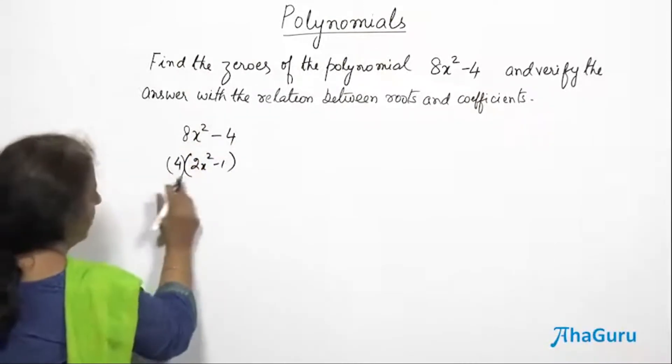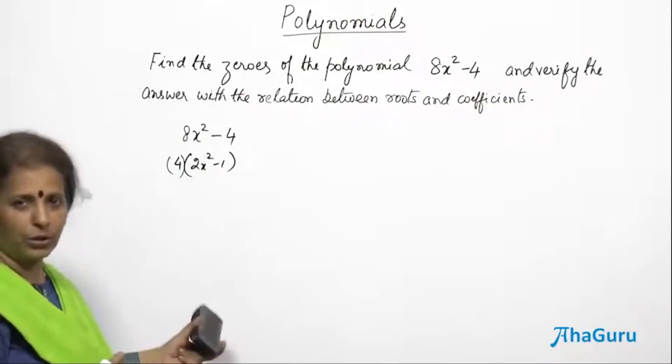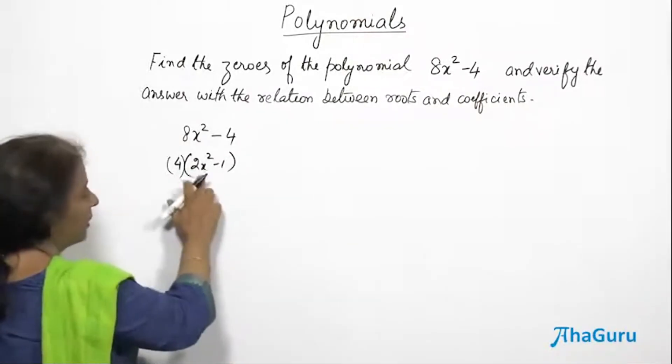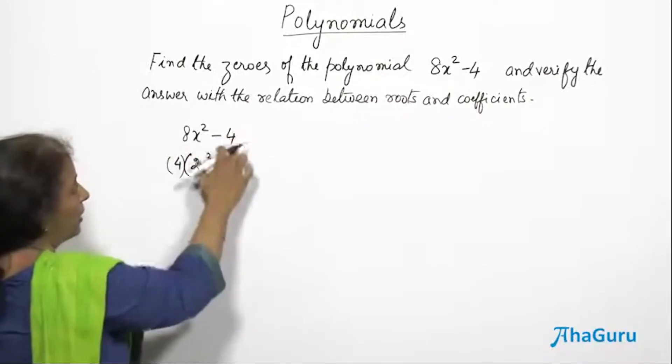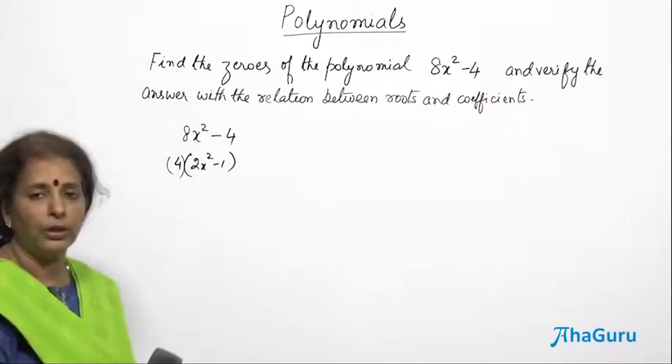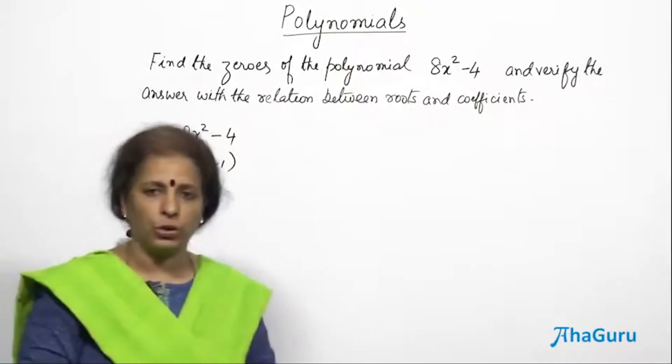4 multiplied by this expression. 4 cannot become 0 because it is already 4 there. Obviously this has to become 0 to make this entire polynomial 0. Then only we will be able to find the roots of the polynomial.